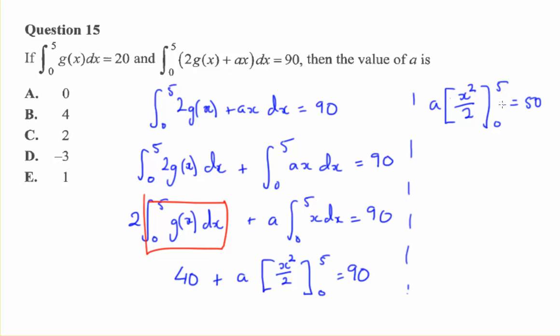Now we can integrate this. We get 25a equals 100 and we divide both sides by 25 to get a equals 4.